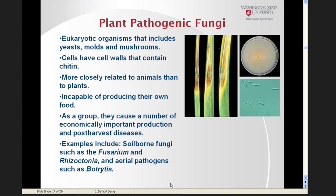The true fungi are eukaryotic organisms that include yeasts, molds, and mushrooms. Their cells have cell walls containing chitin and they're more closely related to animals than plants. The majority are saprophytic and decompose dead organic material, but as a group they cause a number of economically important diseases during production and post-harvest handling. These include soil-borne fungi such as Fusarium and Rhizoctonia, and aerial pathogens such as Botrytis.